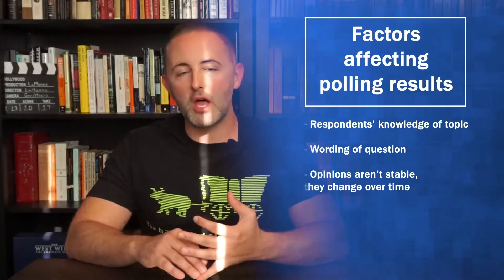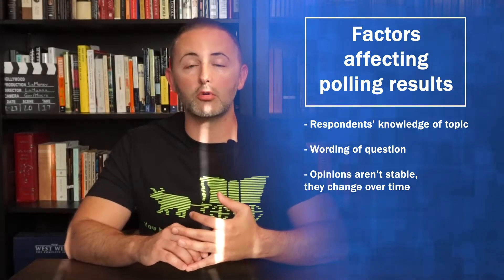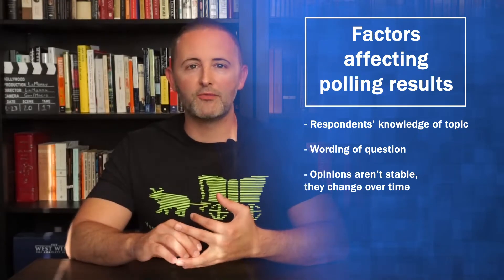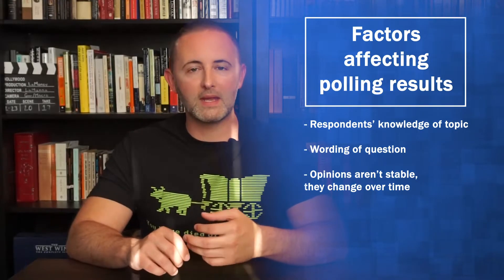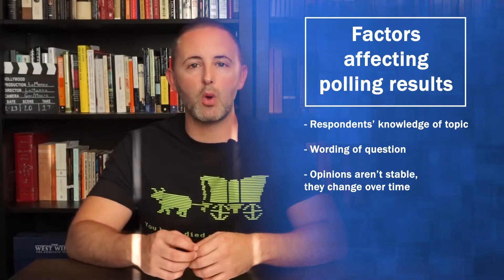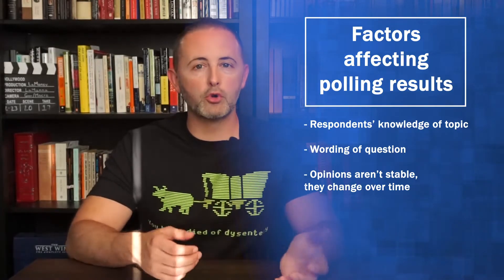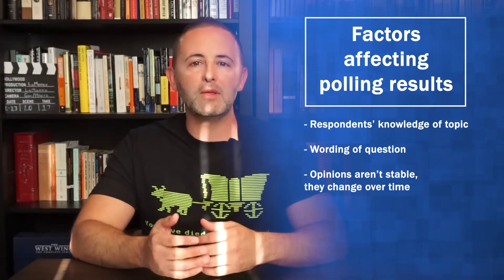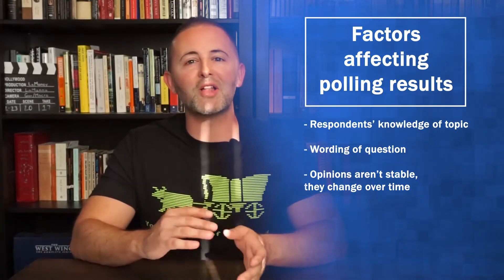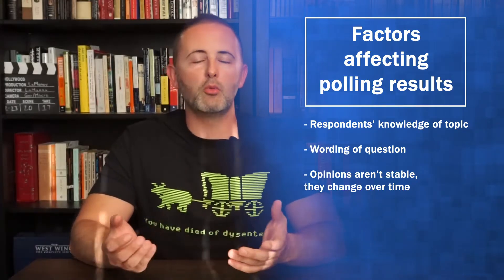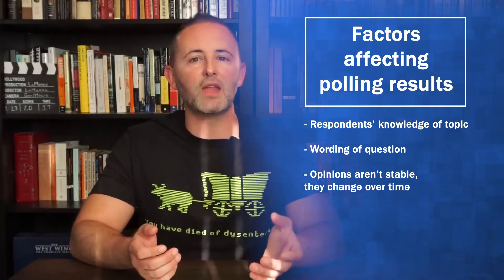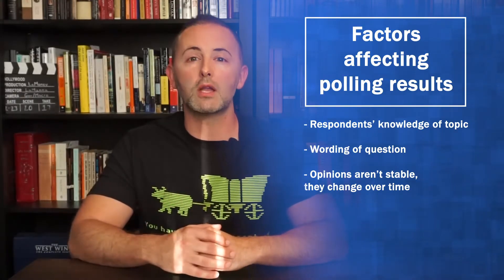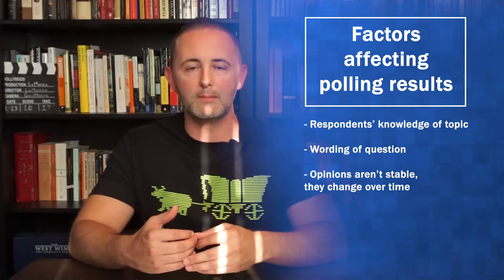There are a number of factors that affect the results of a public opinion poll. Whether people have any knowledge of the topic matters, because sometimes people will pretend they have an opinion even when they don't. The wording of the question matters — if it's asked in a leading way or makes something sound more positive or negative. The answer choices matter too — approve/disapprove versus rating as excellent, good, fair, or poor. And the timing of the poll matters as well. Opinions are not stable; they change over time. It wouldn't be valid to bring up a poll from 1987 as proof that Americans believe something today.